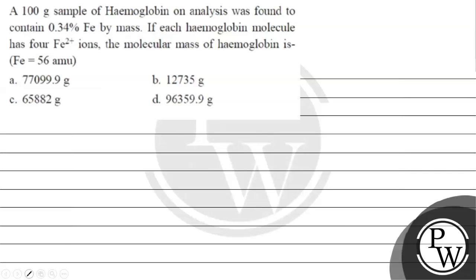Hello Bacho, let's read this question. The question says 100 gram sample of hemoglobin on analysis was found to contain 0.34% of iron by mass.